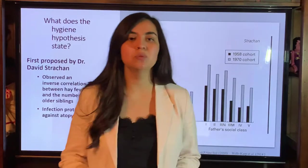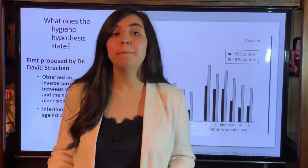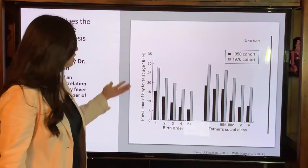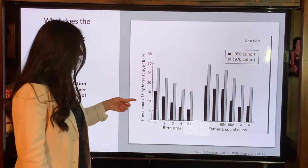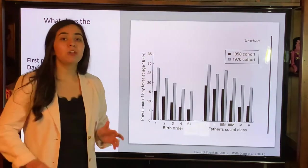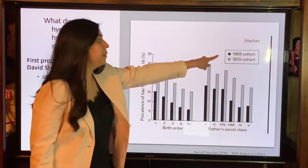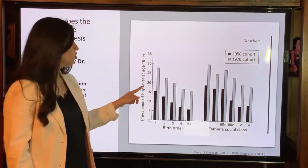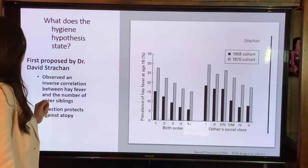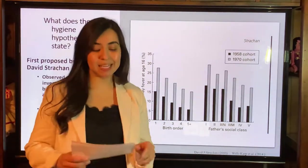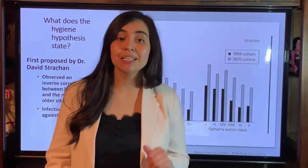The Hygiene Hypothesis was first proposed by Dr. David Strachan, who observed an inverse correlation of hay fever and birth order. As you can see on the x-axis we have birth order and father social class, and on the y-axis we have prevalence of hay fever at the age of 16. He followed over 17,000 British children born in 1958, and you can see the inverse correlation between hay fever and birth order. Thanks to his findings, he postulated that infection protects against atopy, and that early childhood infections inhibit the tendency to develop allergic diseases later on in life.